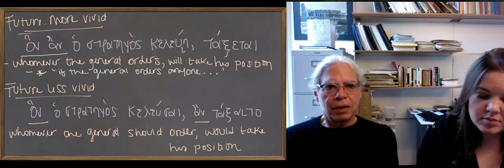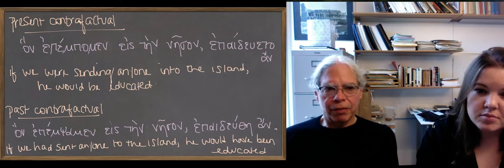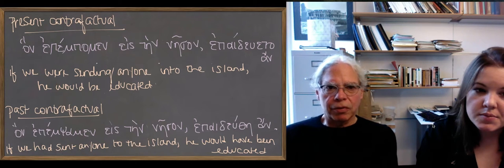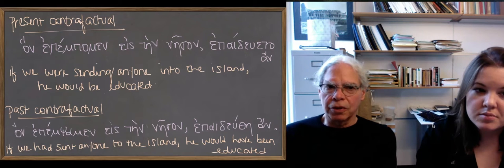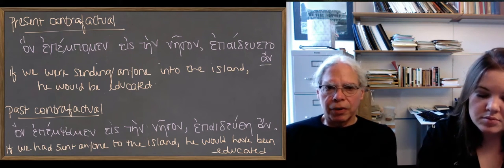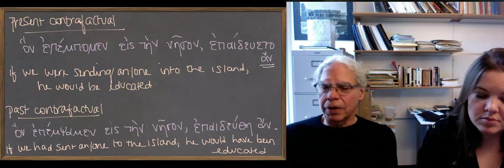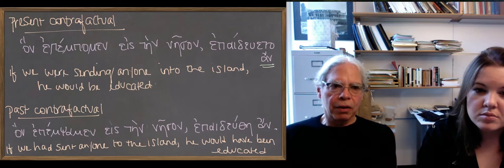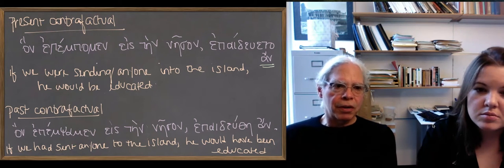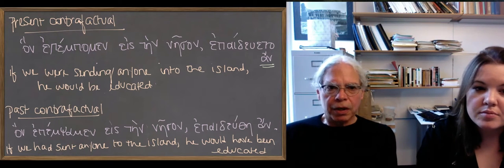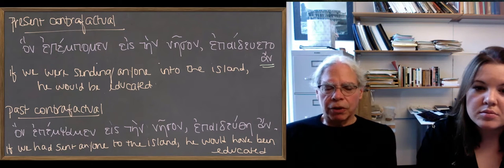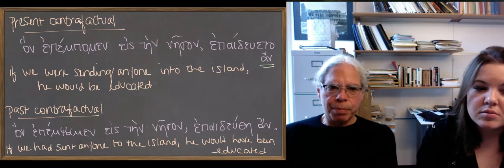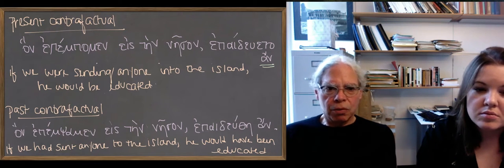Lastly, there's the contrafactual ones, which are the rarest of my way of thinking anyway, of these. So we're using the example from the book. Han a pempomen, este nason. You've got the imperfect of the verb pempo in a contrafactual condition. And then epidewata an, the imperfect with an in the conclusion. So this, I don't think there's a way you can really translate this with whomever. What we've done is the if version. If we were sending anyone into the island, if you do it as a, as a whomever clause, it's hard to get the contrafactual nature into the English. So if we were sending anyone into the island, he would be educated. And the past contrafactual with eris substituted for the imperfects, epempsamen instead of epenpomen. And epidewata, eris passive instead of epidewata. If we had sent anyone into the island, he would have been educated.